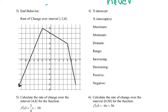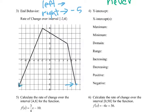So, end behavior — we've got left and right. As we go to the right, it looks like it stops right here at negative 5. As we go to the left, notice we have that arrow and it's going down to the negative infinity end zone. So as we go left, it goes to negative infinity.